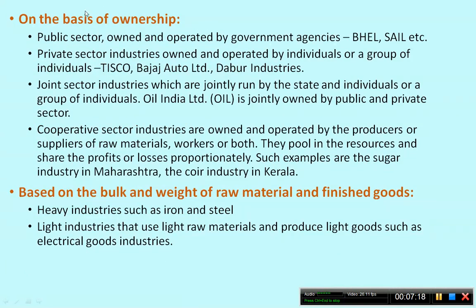On the basis of ownership, industries are classified into four categories: public sector, private sector, joint sector, and cooperative sector industries. Public sector industries are owned and operated by government agencies, like SAIL (Steel Authority of India Limited) and Bharat Heavy Electricals Limited. Private sector industries are owned and operated by individuals or a group of individuals, like TISCO (Tata Iron and Steel Corporation) and Bajaj Auto Limited.